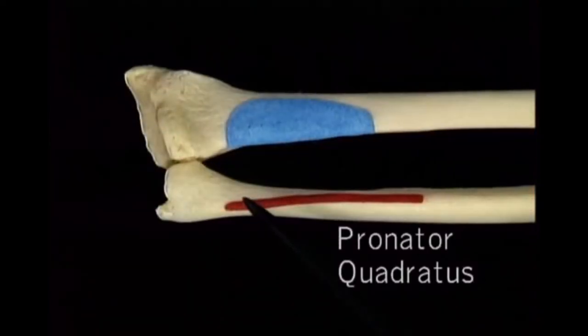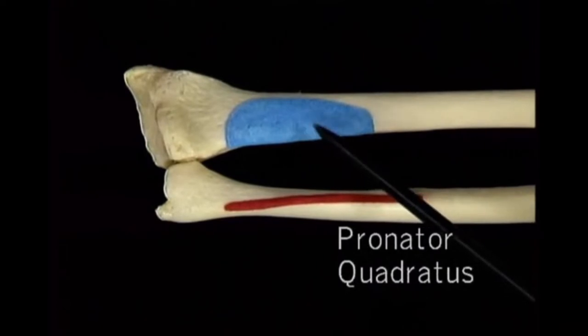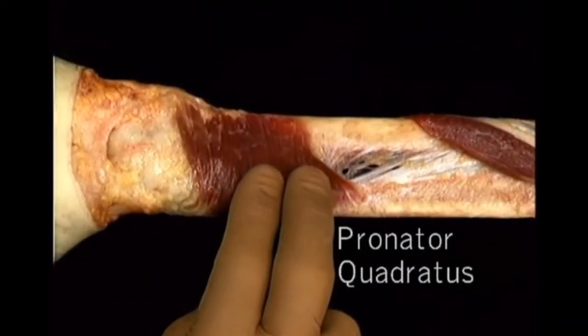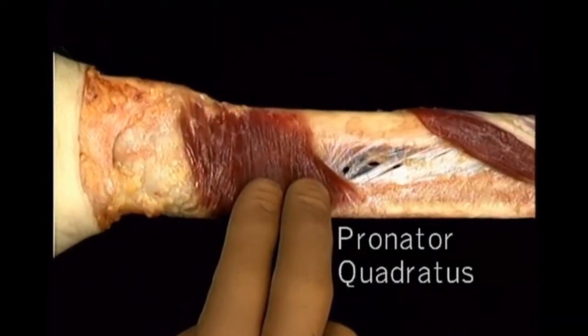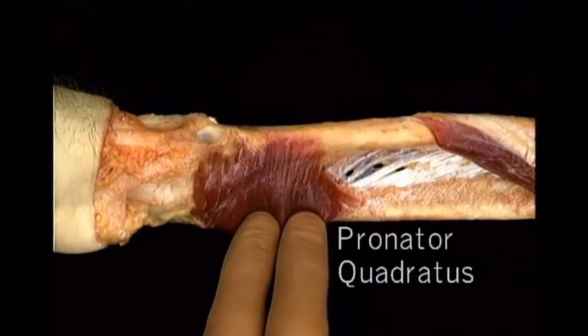Here is the pronator quadratus, a quadrilateral-shaped muscle with origin from the ulna and insertion into the radius. Its contraction causes rotation of the lower end of the radius around the ulna.